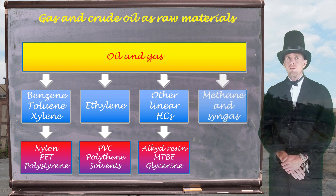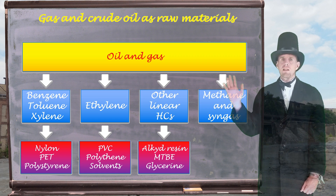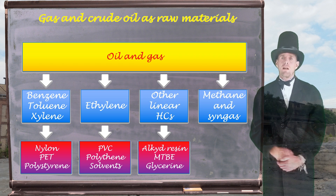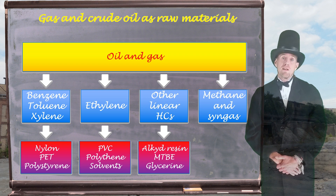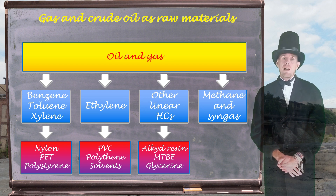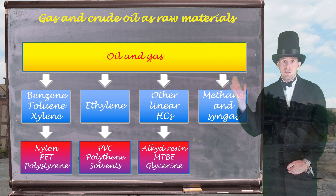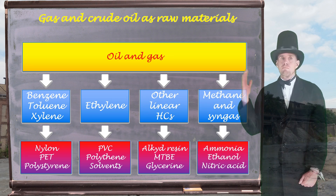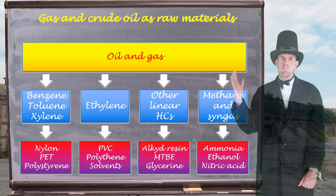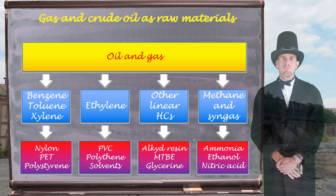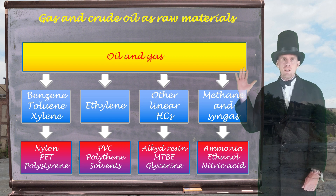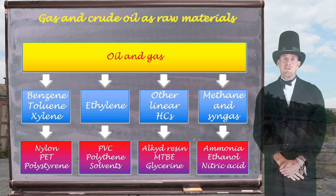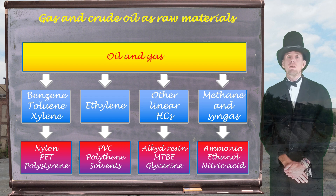The last of the major processing routes is methane and syngas. Syngas is short for synthesis gas — simply a mixture of carbon monoxide and hydrogen. In my era we didn't use methane for synthesis gas, we used coal — it used to be called towns gas or producer gas. But from synthesis gas there is a whole industry built, with end products including things like ammonia, ethanol, and nitric acid. One of the key messages is that even in your era, oil and gas are very important raw materials for the chemical industry, so we need to know a little bit about them.